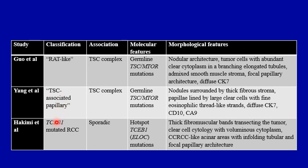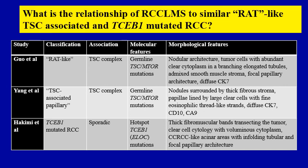Recently, Hakimi et al. described a subset of sporadic renal cell carcinomas with morphology very similar to RCC-LMS, harboring a hotspot TCEB1 mutation — now also referred to by the new gene name ELOC. I will be referring to both of these interchangeably. The next important question is: what is the relationship of RCC-LMS to similar RAT-like or TSC-associated papillary-like TSC RCCs and TCEB1-mutated RCC?